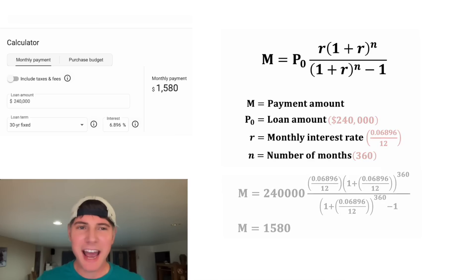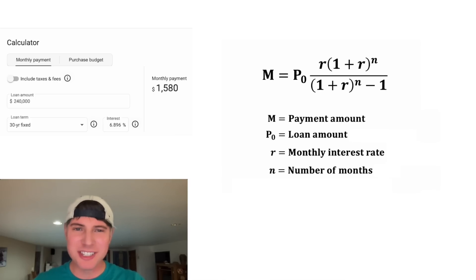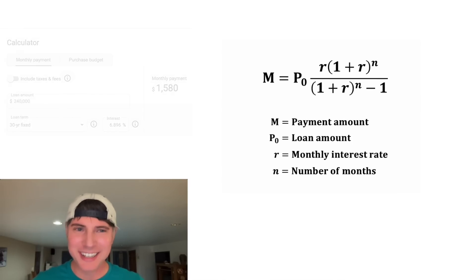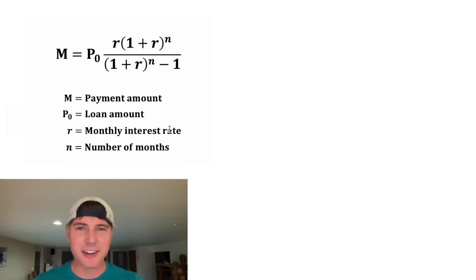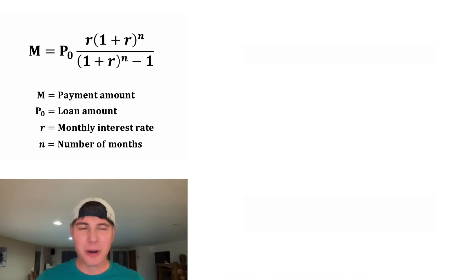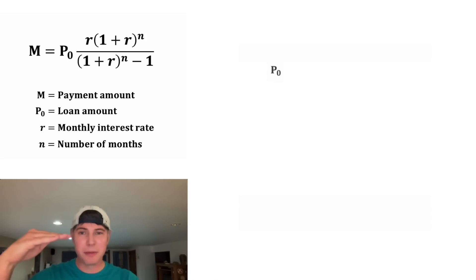But how do we know we can trust this formula? This thing looks crazy. Let's see if we can derive this on our own. So the way loans work, we start with the loan amount — the P₀.